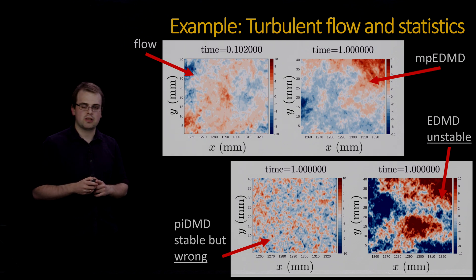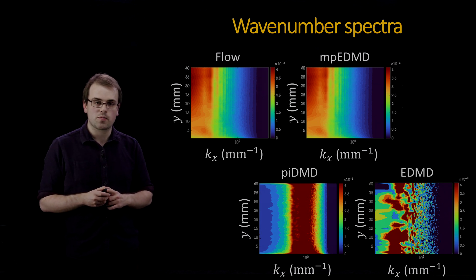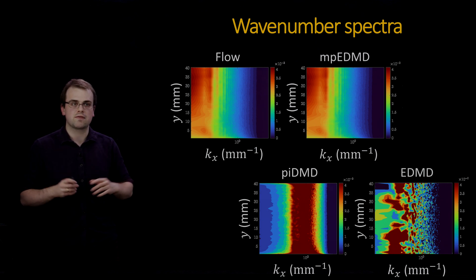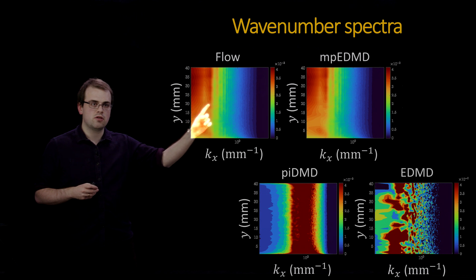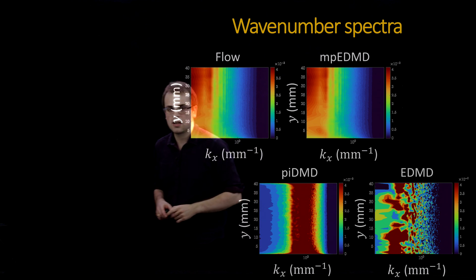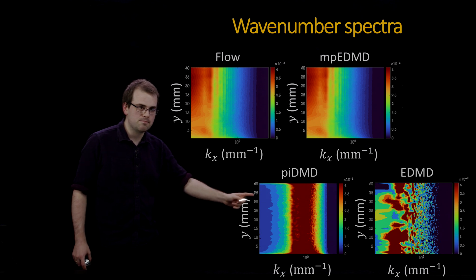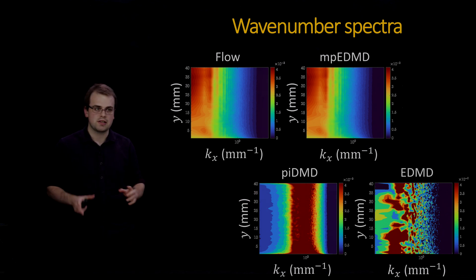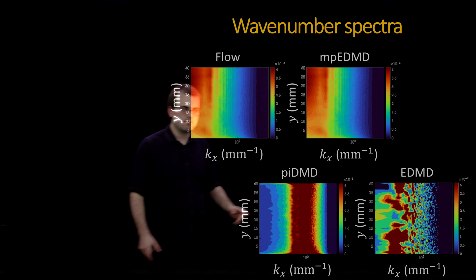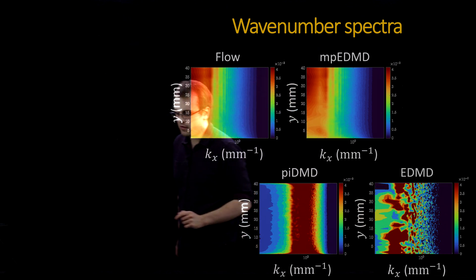We can also examine wavenumber spectra — roughly Fourier transforms of autocorrelations — which give the turbulent statistics of the flow. MPE-DMD's statistics are nearly indistinguishable from the true statistics. PI-DMD is stable but has the wrong statistics, particularly a band at the wrong frequency. EDMD gives an unstable prediction, visible in the lower frequencies.